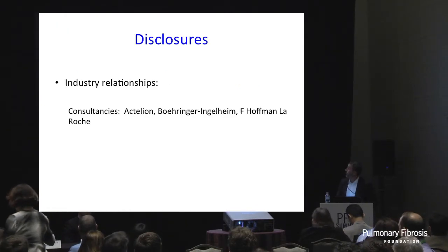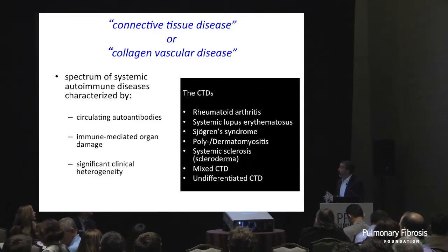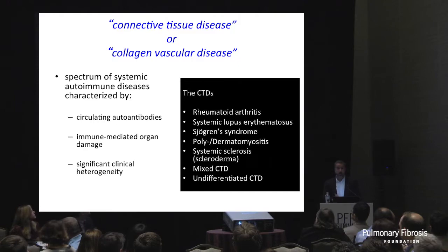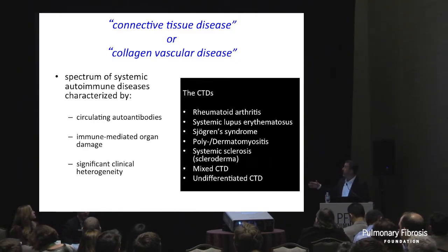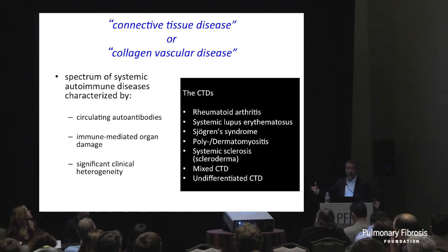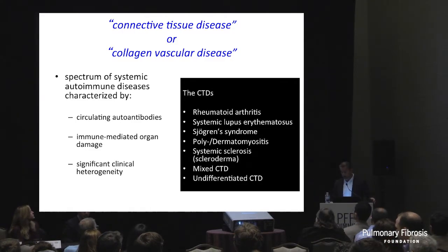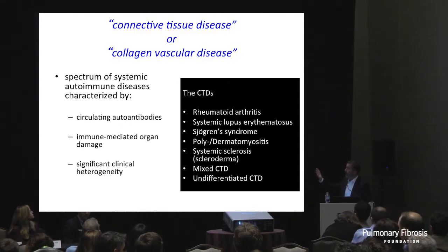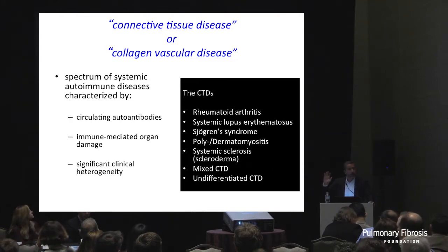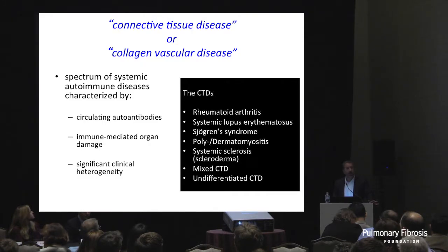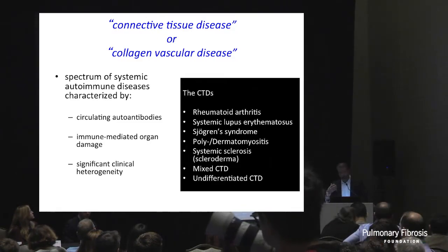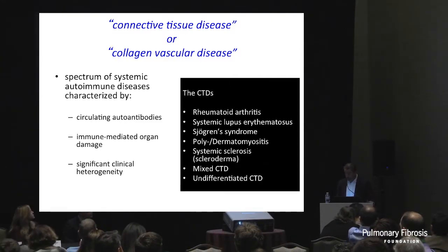None of my disclosures are really related to anything I'll be discussing — I'm not talking about management. The title of my talk is how to assess for connective tissue disease or autoimmunity in ILD. We're talking about the autoimmune spectrum — these are the diseases we're focusing on, not the ANCA-associated vasculitides. We're really talking about the spectrum of connective tissue disease, which is a pathologically derived term implying systemic autoimmunity, with a lot of heterogeneity.